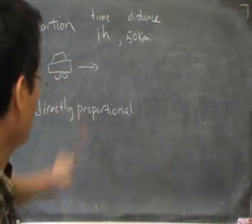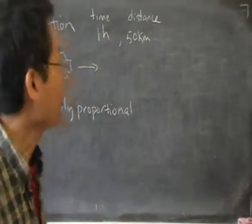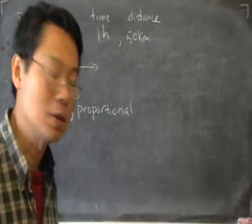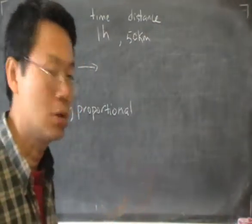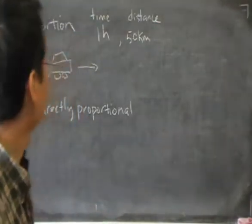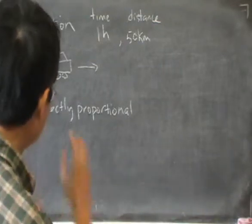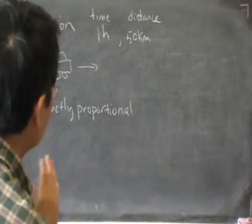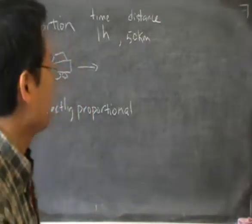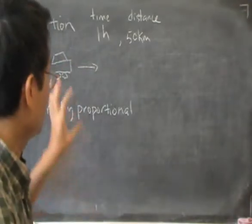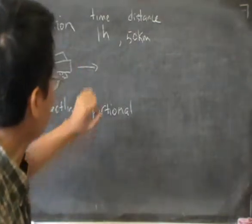If one increases by so many times, the other must increase by the same number of times. This is a very simple and very specific kind of relationship. When you see the words 'directly proportional,' that's what it means. And it doesn't have to be time and distance — it can be any two things, like cost and the weight of an apple. You can see there is an obvious similarity between the idea of proportion and of ratio.